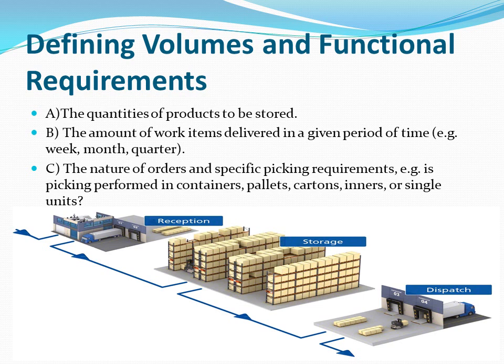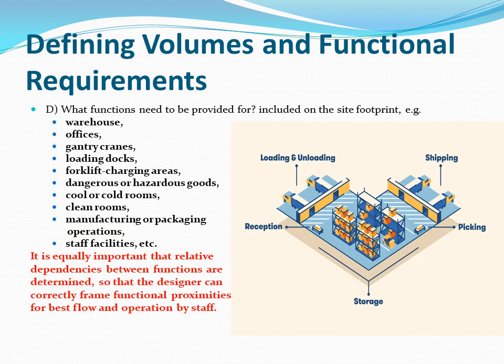Part c: the nature of orders and specific picking requirements — for example, is picking performed in containers, pallets, cartons, inners, or single units? Part d: what functions need to be provided for and included on the site footprint — for example, warehouse, offices, gantry cranes, loading docks, forklift charging areas, dangerous or hazardous goods storage, cool or cold rooms, and clean rooms.